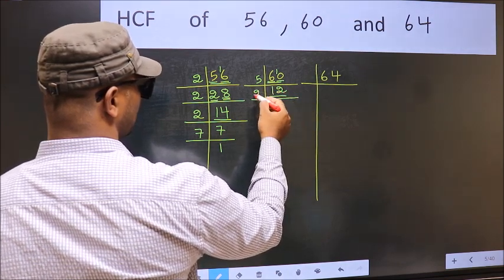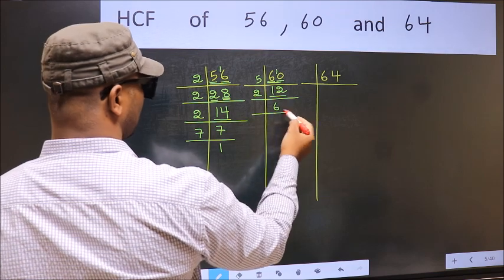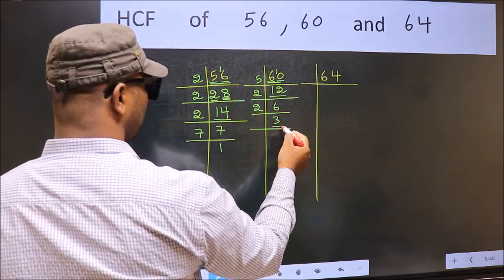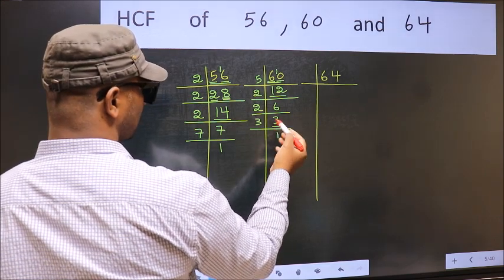Now we have 12, 12 is 2 times 6 is 12. Now 6 is 2 times 3 is 6. Now we have 3, 3 is a prime number, so 3 times 1 is 3.